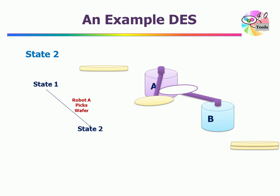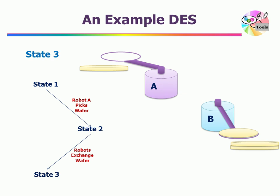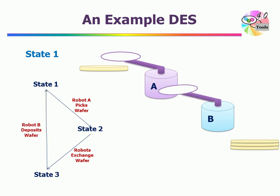In state 2, the event which is robots exchange wafer takes place, resulting in a new state 3, which can be characterized as one where arm A is without wafer and arm B is with a wafer. Then the two arms again move, and we do not have a new state for this movement — again, this is our abstraction. In state 3, robot arm B is close to the second stack. It deposits the wafer, which is modeled as the event robot B deposits wafer, and now the system is back to its initial state 1.